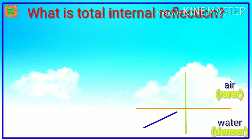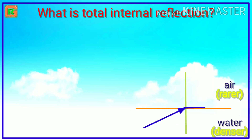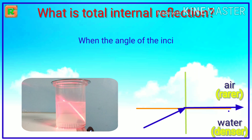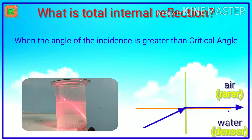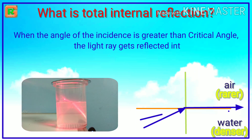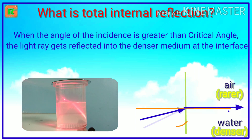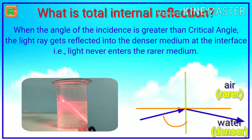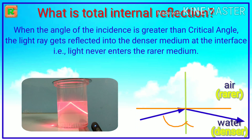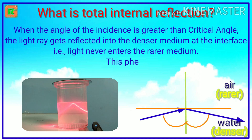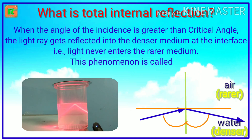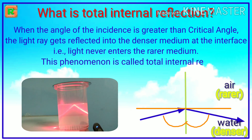Now let us go back to understand the definition of total internal reflection. When the angle of incidence is greater than the critical angle, the light ray gets reflected into the denser medium at the interface. That is, light never enters the rarer medium. This phenomenon is called total internal reflection.